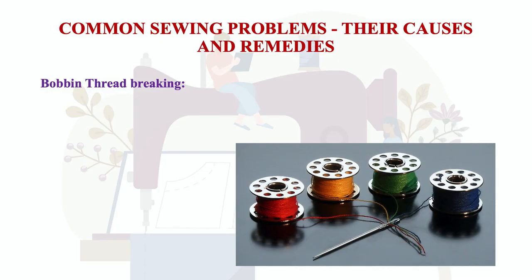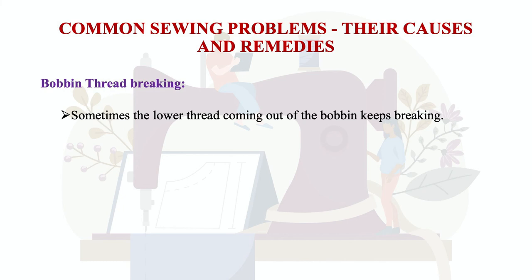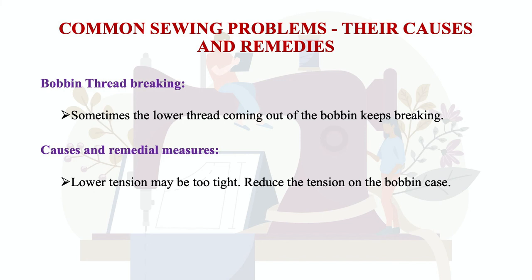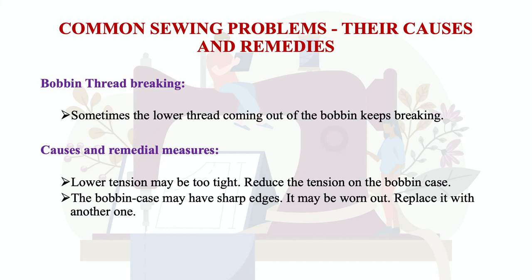Another common problem is bobbin thread breaking — the lower thread coming out of the bobbin breaks. The main cause is that lower tension of the bobbin may be too high or too tight, so you can adjust using the tension regulator. The bobbin case may also be damaged, in which case you should replace it.